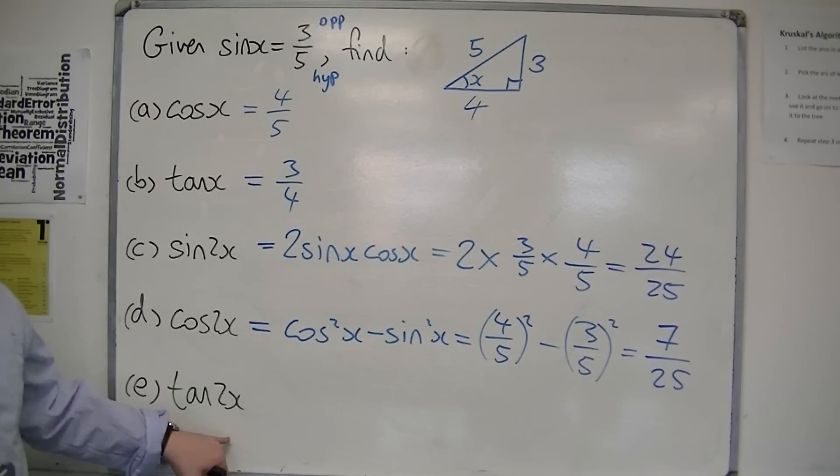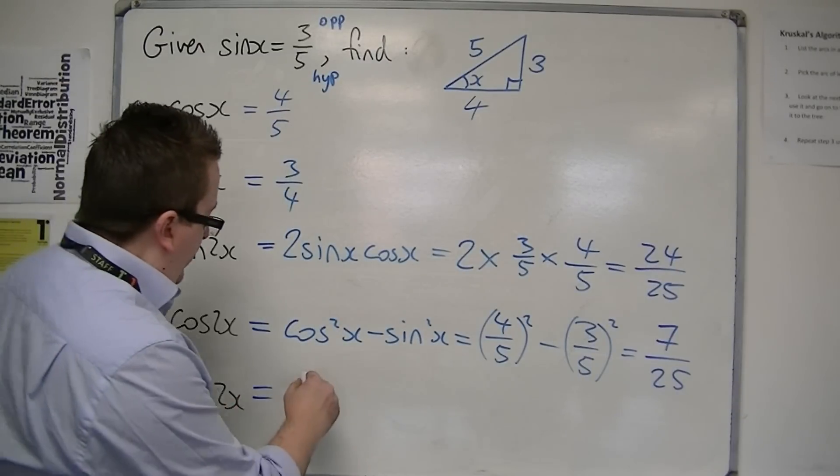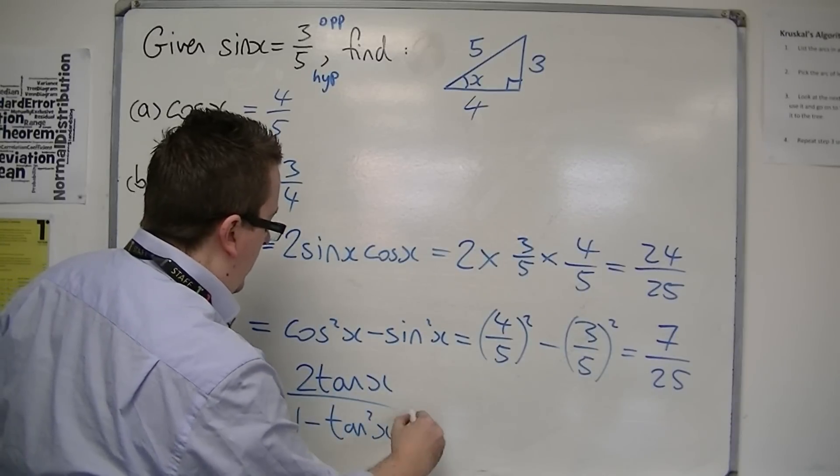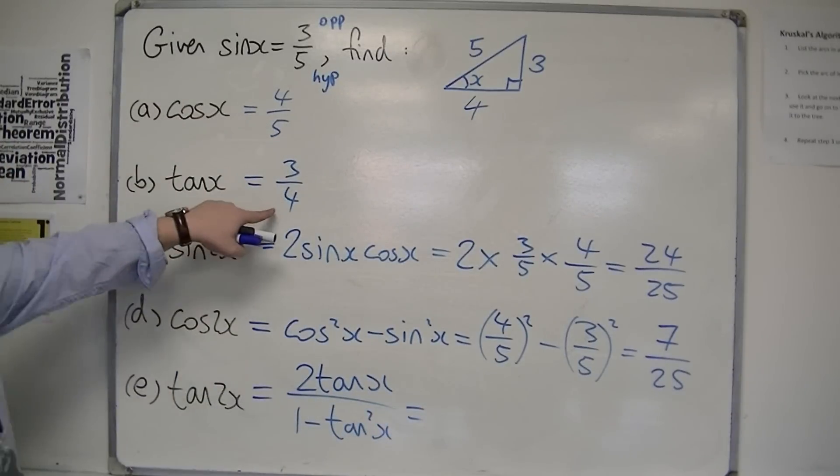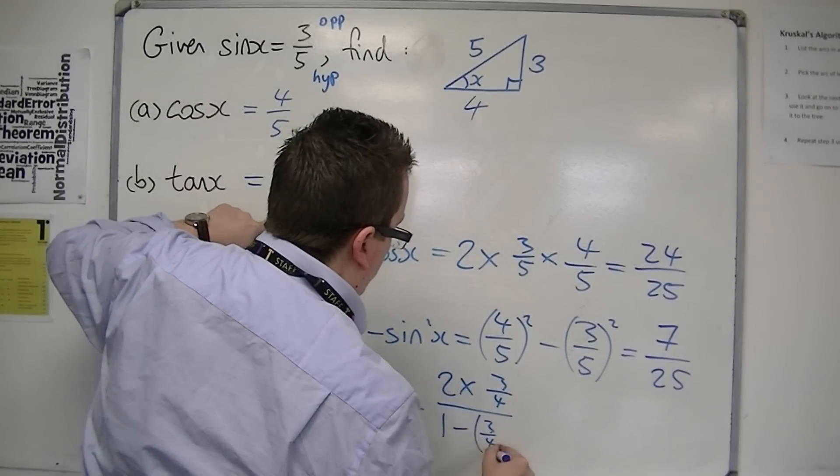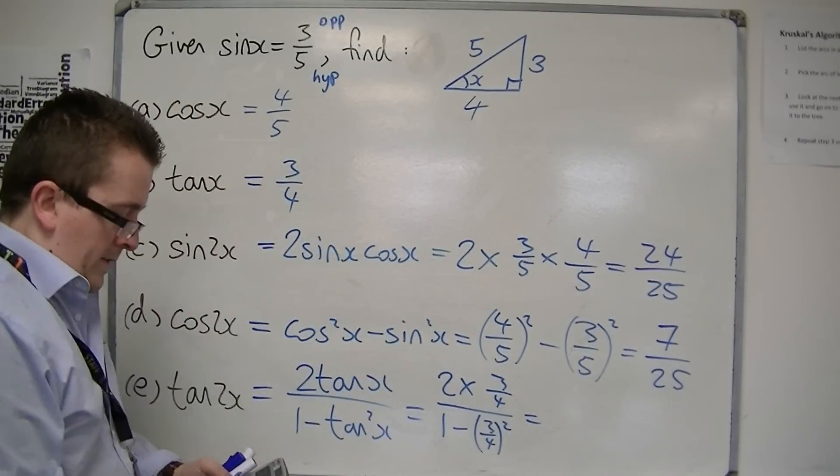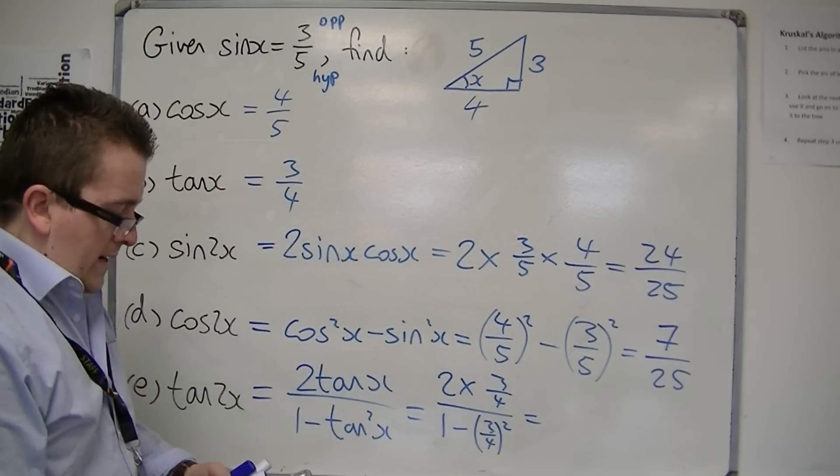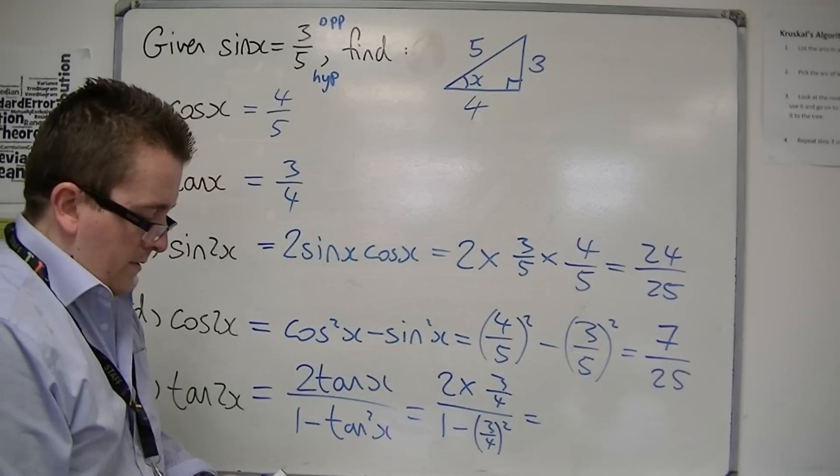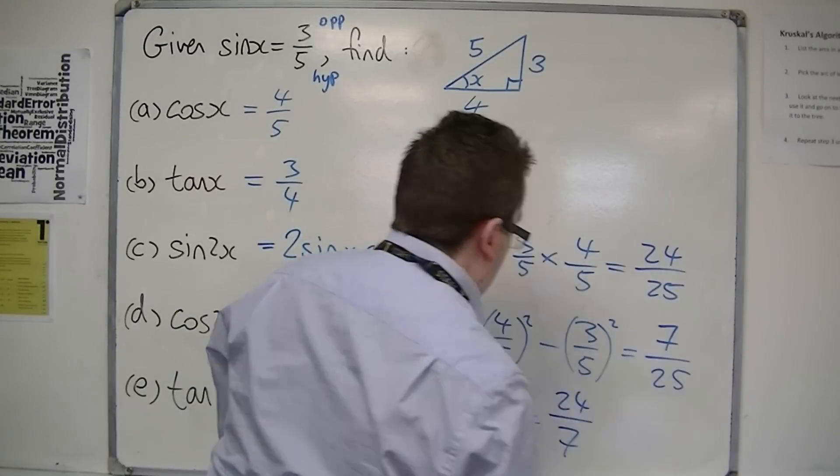Then we've got tan 2x for the final one. Tan 2x is 2 tan x over 1 minus tan squared x. If I've got tan x, then that's 2 lots of 3/4 over 1 minus (3/4)² - just substituting it straight in. I'm not going to trust my mental arithmetic for this one. You're probably going 'Jack, what are you doing? That's easy.' But I'm just going to make sure I get it right. So that's 24/7.